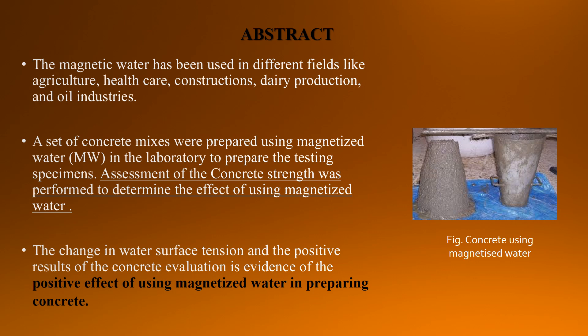Moving toward application. Magnetic water has been used in different fields like agriculture, healthcare, construction, dairy production, and oil industries. A set of concrete mixes were prepared using magnetized water in the laboratory to prepare the testing specimens. Assessment of the concrete strength was performed to determine the effect of using magnetized water. The change in water surface tension and the positive result of the concrete evaluation are evidence of the positive effect of using magnetized water in preparing concrete.